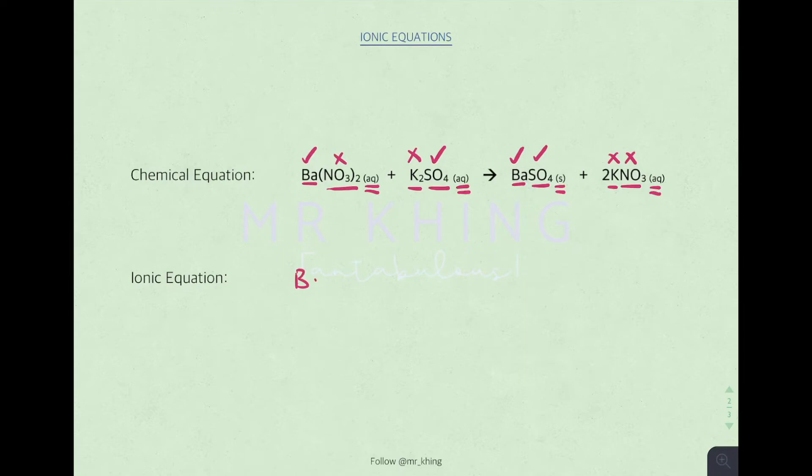Eventually, you will get Ba2+ aqueous reacts with SO4 2- aqueous to form BaSO4 solid. This is the ionic equation. Pretty easy, just by comparing the state symbol.